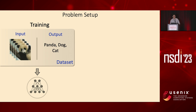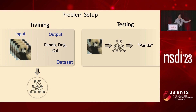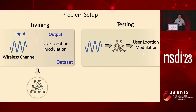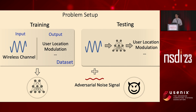Let's get started by talking about the problem setup. Traditionally, to train a neural network, you collect a dataset comprising inputs such as images and a bunch of labels, feed the image into the neural network, and get the correct output. In wireless systems, this is a little different because most machine learning-based wireless systems adopt wireless channels as input. Wireless channels are nothing but the estimation of the surrounding wireless environment. The output or prediction of the neural network becomes user locations, modulation scheme, and so on. What we want to do is transmit an adversarial noise signal that gets superimposed with the input to the neural network so that the prediction gets disrupted.